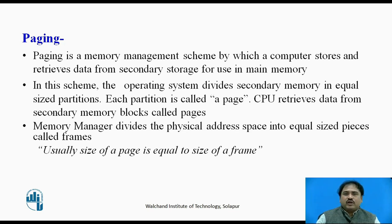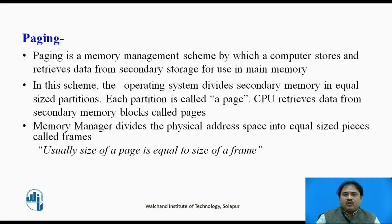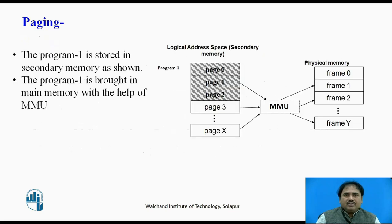The program stored in secondary memory covers a number of pages. For example, a program can cover 15 pages in secondary memory. Similarly, the memory manager divides the physical memory (RAM) into equal-sized pieces called frames. The size of a frame is always equal to the size of a page. The size of physical memory is always less than the size of secondary memory, which means we never bring all contents of secondary memory into main memory — only the required part is brought into main memory.